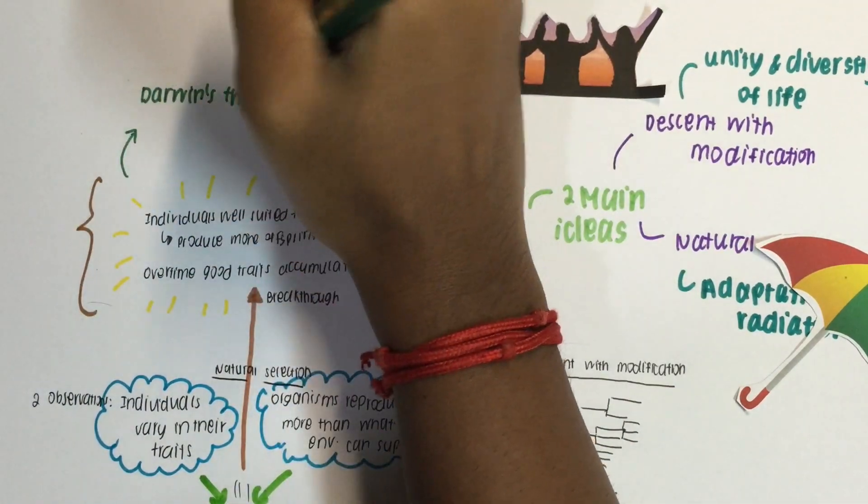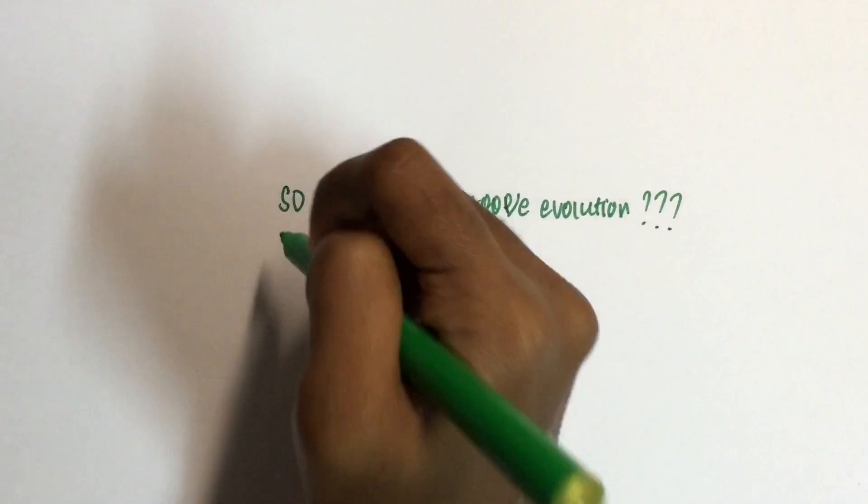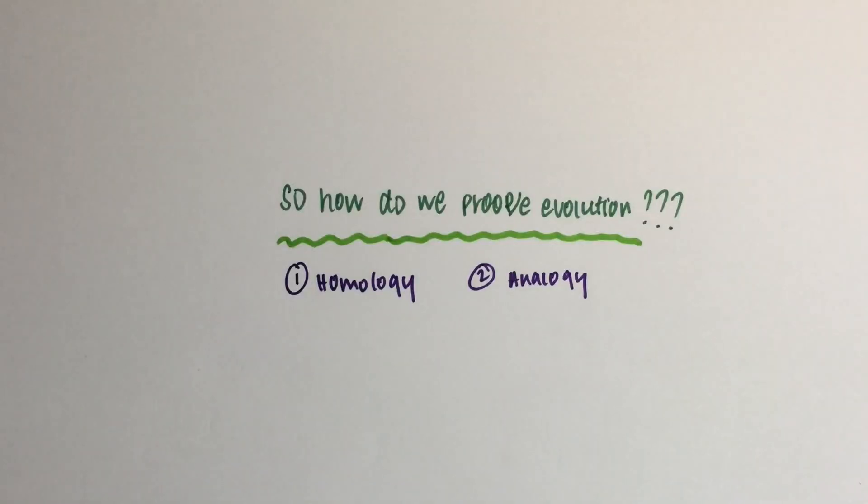When we combine Darwin's theory with modern genetics, we have Neo-Darwinism. The most difficult part of a theory is to prove it, and Darwin did it through three methods: homology, analogy, and fossil.